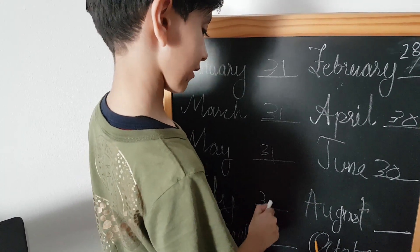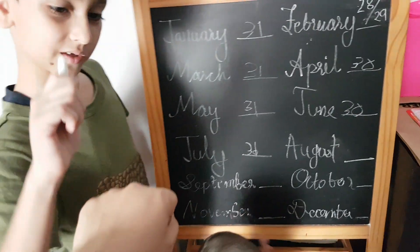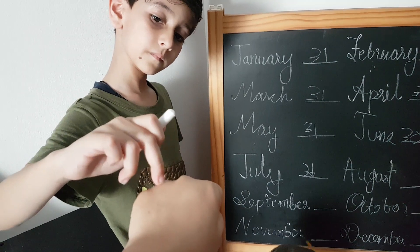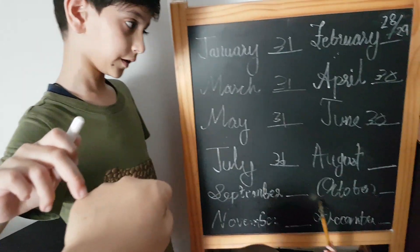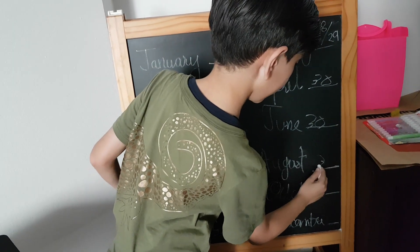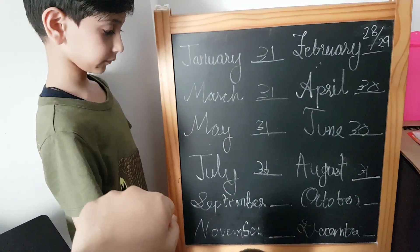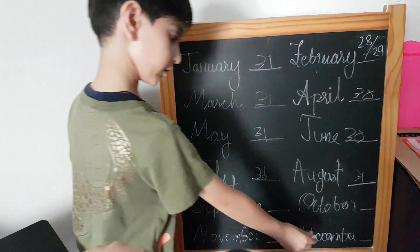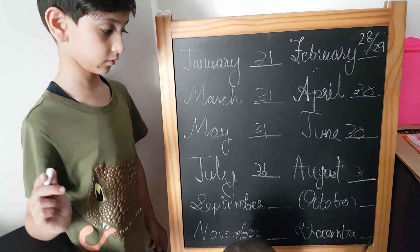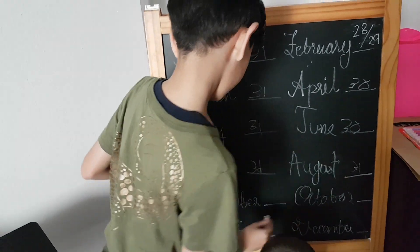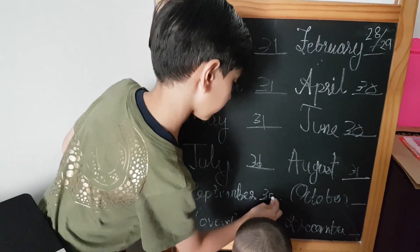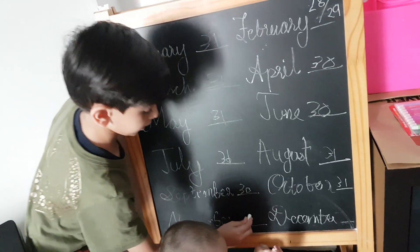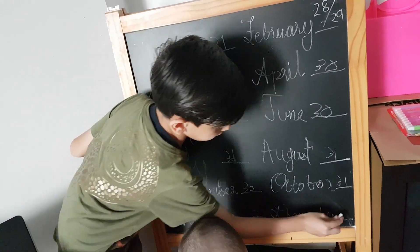January, February, March, April, May, June, July, and August all fall on the same bump, so August will have 31 days again. September comes down, so it will have 30 days. October 31, November 30, December 31.